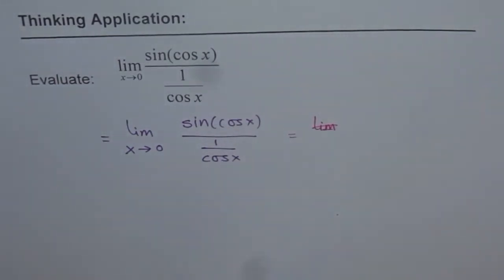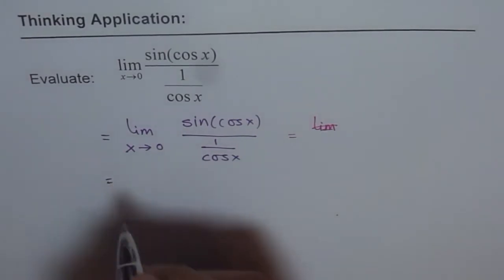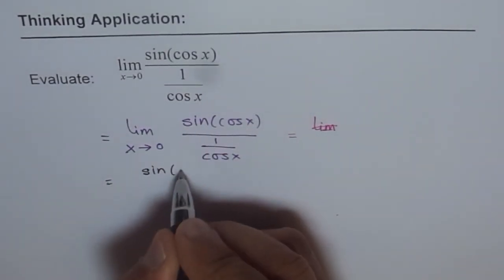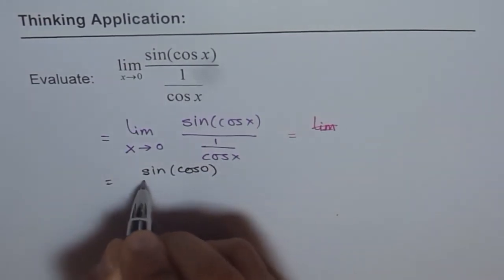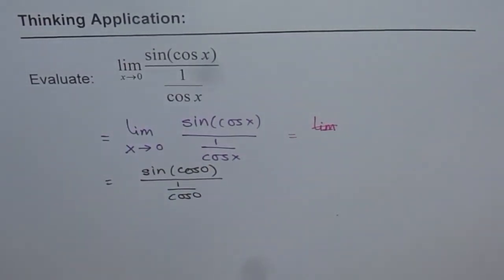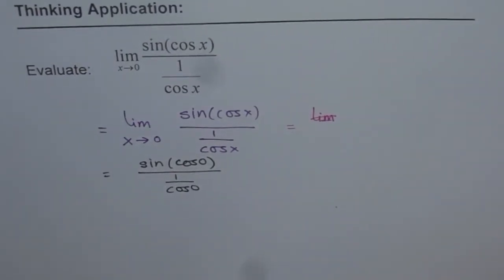And then write down our answer. So we get sine of cos 0 over 1 over cos 0. Have a good look at it. What do you get?